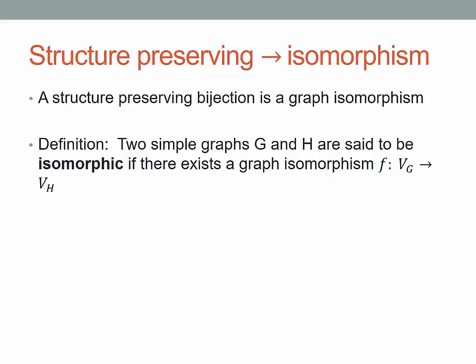So such a mapping that has this adjacency preserving condition is our graph isomorphism. And so two graphs are isomorphic if there exists a graph isomorphism between the vertex sets.